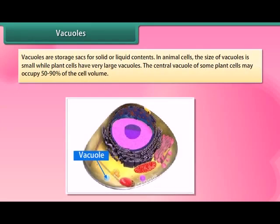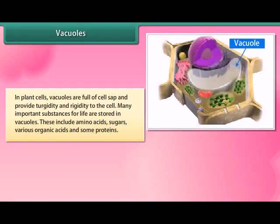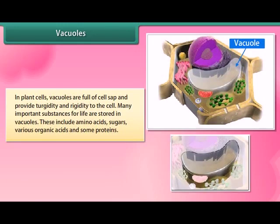Vacuoles are storage sacks for solid or liquid contents. In animal cells, the size of vacuoles is small, while plant cells have very large vacuoles. The central vacuole of some plant cells may occupy 50 to 90 percent of the cell volume. In plant cells, vacuoles are full of cell sap and provide turgidity and rigidity to the cell.